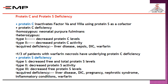Protein S is a co-factor for protein C, so deficiency of protein S renders protein C non-functional. There are three types of protein S deficiency: type 1 — decreased free and total protein S; type 2 — decreased protein S activity; type 3 — decreased free protein S level.